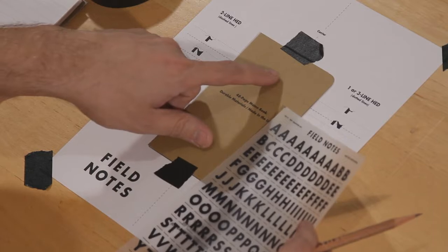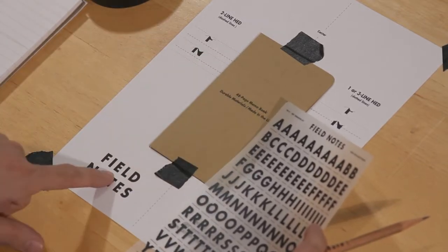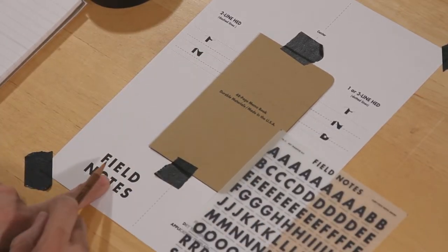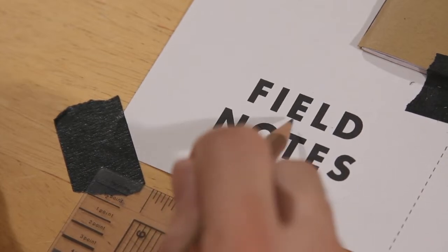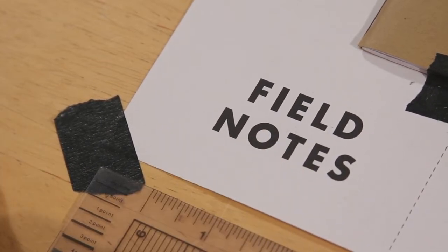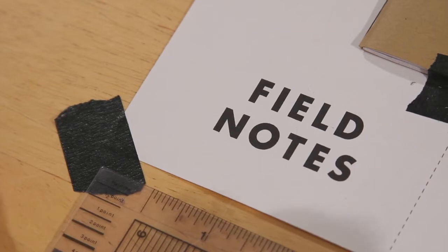The center line, as you can see, is right here. I'm going to start with field. Don't forget that certain letters are narrower than others. So an E isn't necessarily in the middle of the word field. You can see it's a little bit to the left because the I is so narrow and the D is a little bit wider.